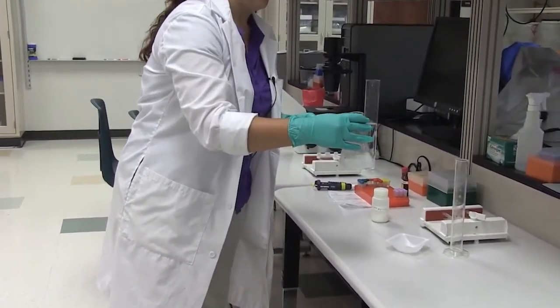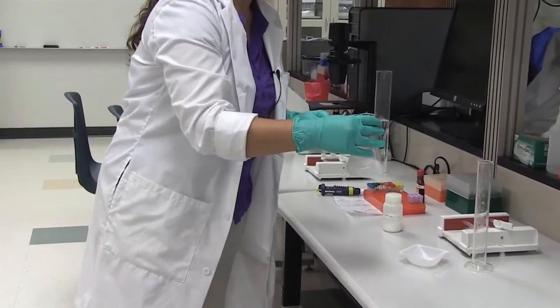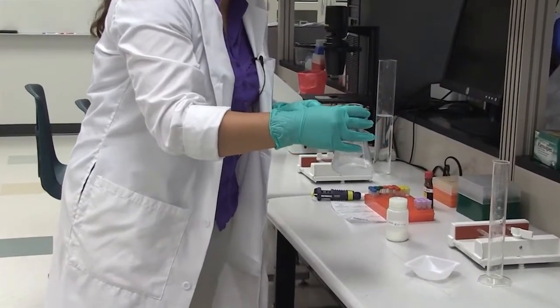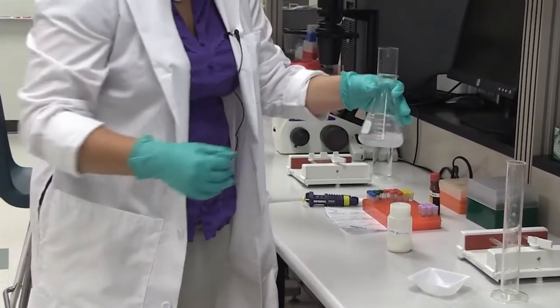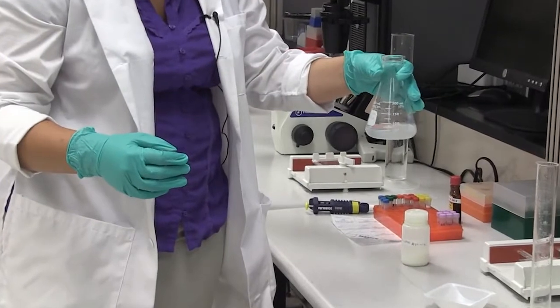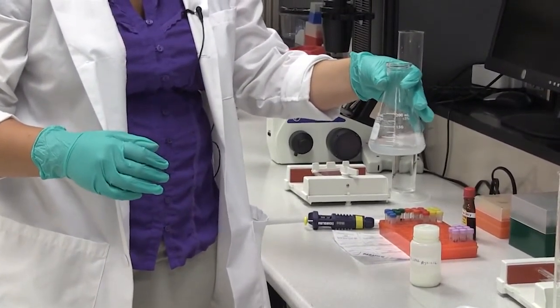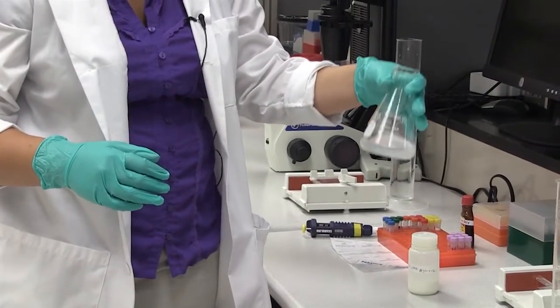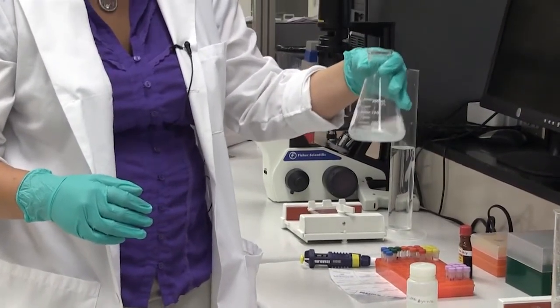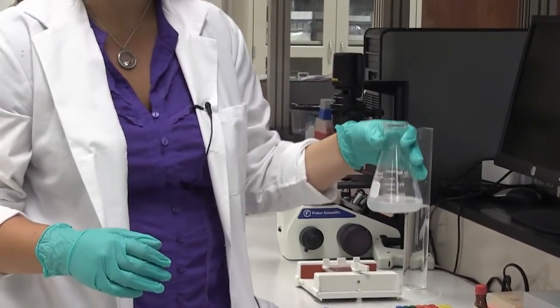Now that we have combined the agarose and the buffer, we need to let it hydrate for about a minute at room temperature. Then we're going to take it over to the microwave, add heat, swirl it twice during the minute time that it is being microwaved, and we will have a nice clear agarose that's ready to pour.